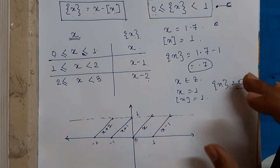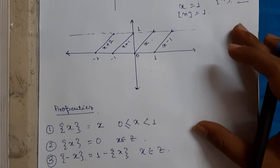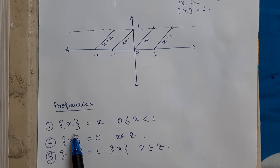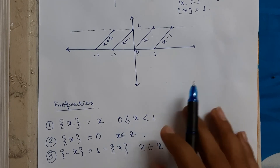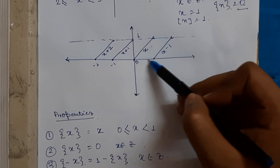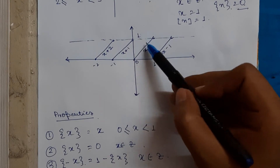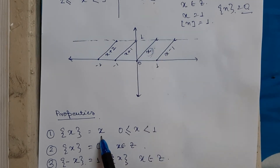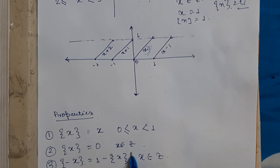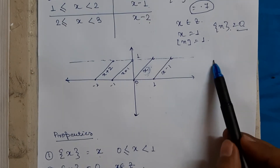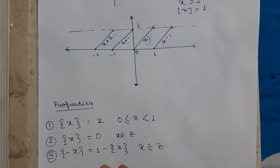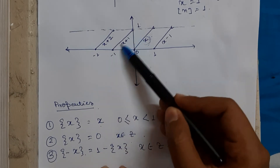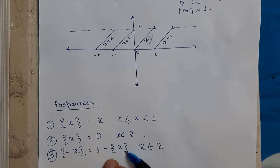Some properties of the fractional part of x: when x is an integer value, it will always return zero. And when x is not an integer, it returns 1 minus the fractional part of x when negated (i.e., {-x} = 1 - {x}).